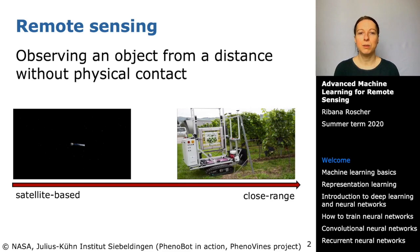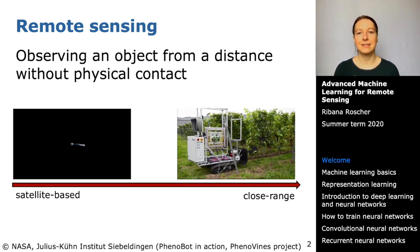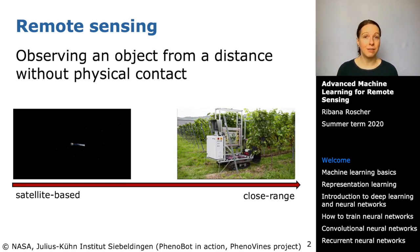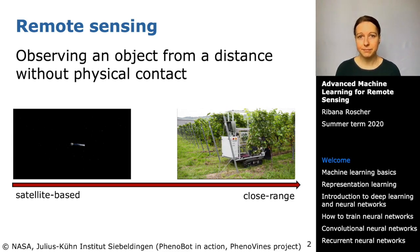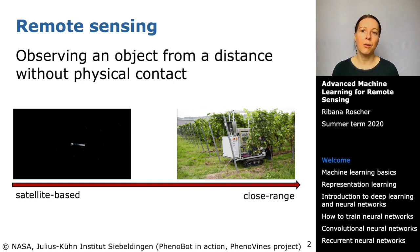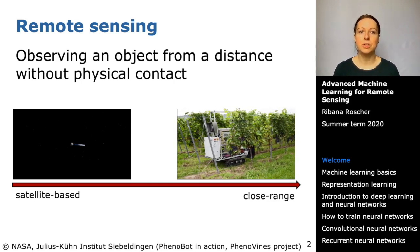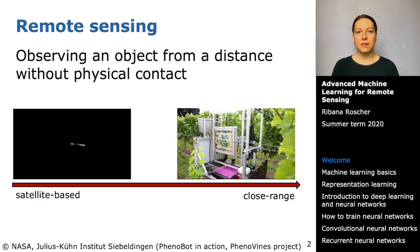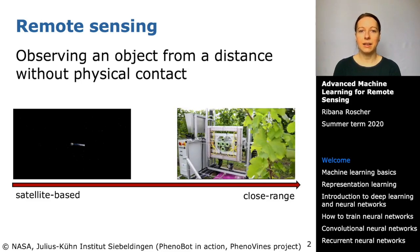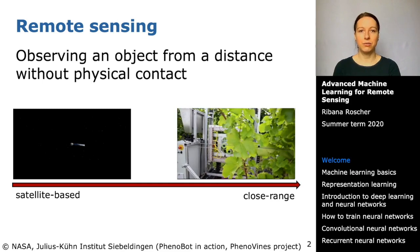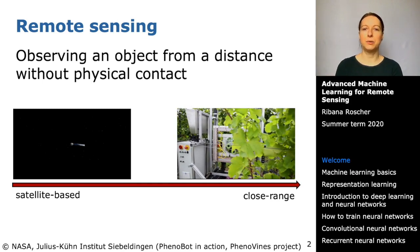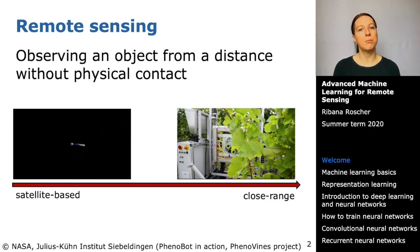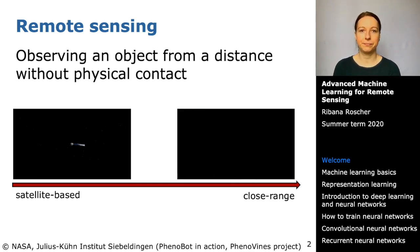But remote sensing can also be performed at close range, as is the case for many agriculture applications. The sensor you use and from which distance you use it always depends on what you want to observe and which resolution you need for your intended application. In the following lectures I will show you applications where satellite data is used, but also agriculture applications with close range sensors such as handheld cameras or UAVs.